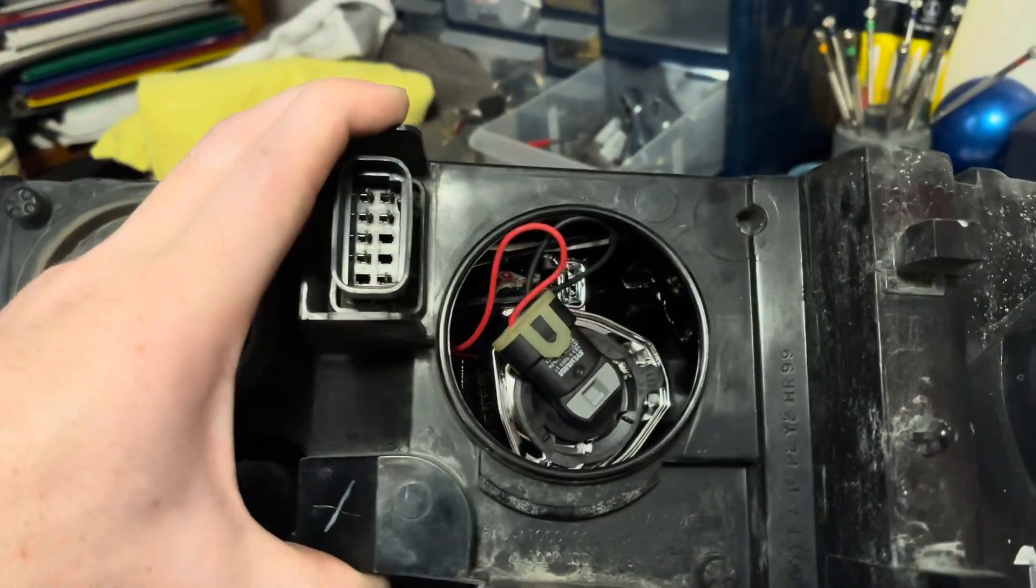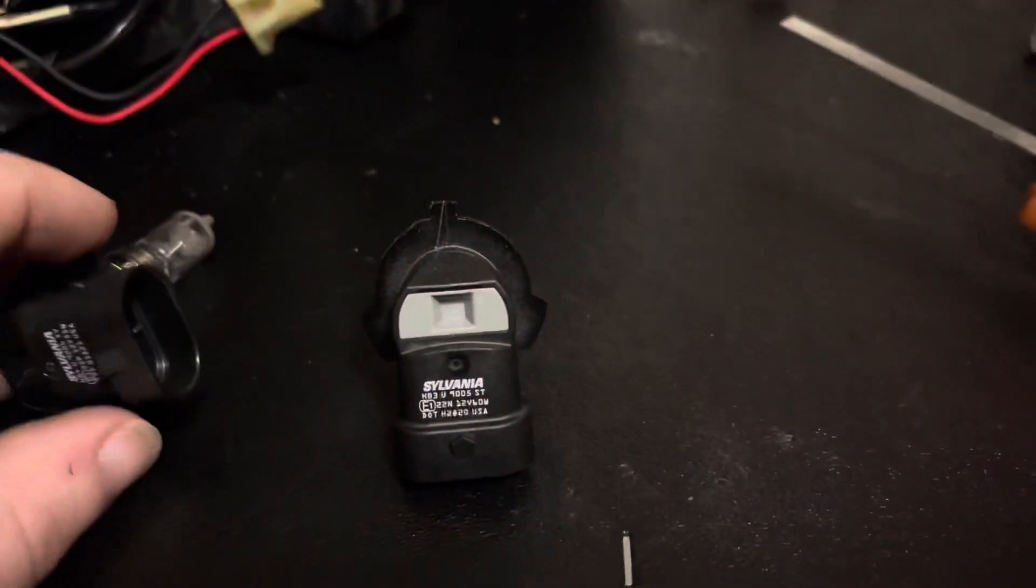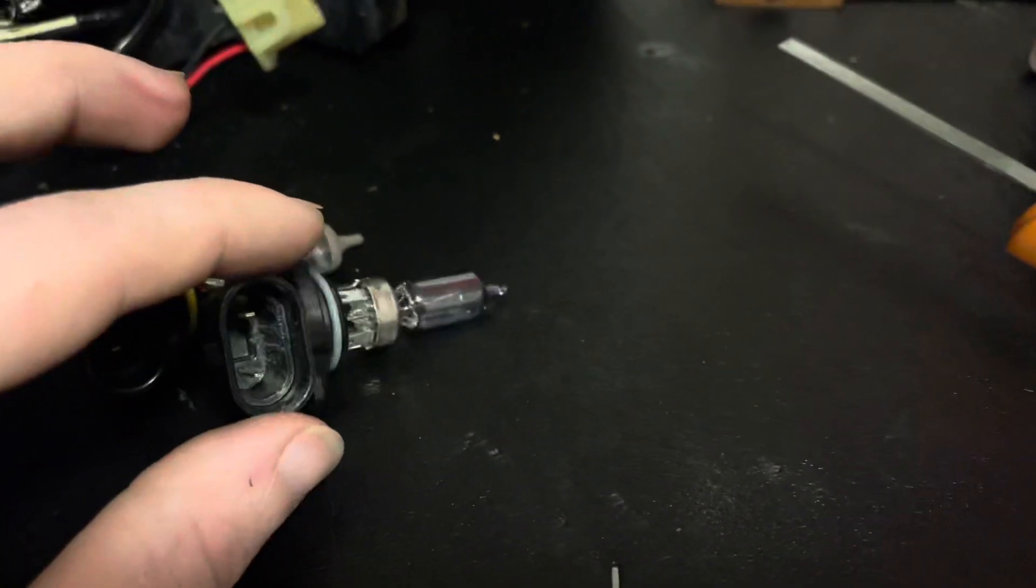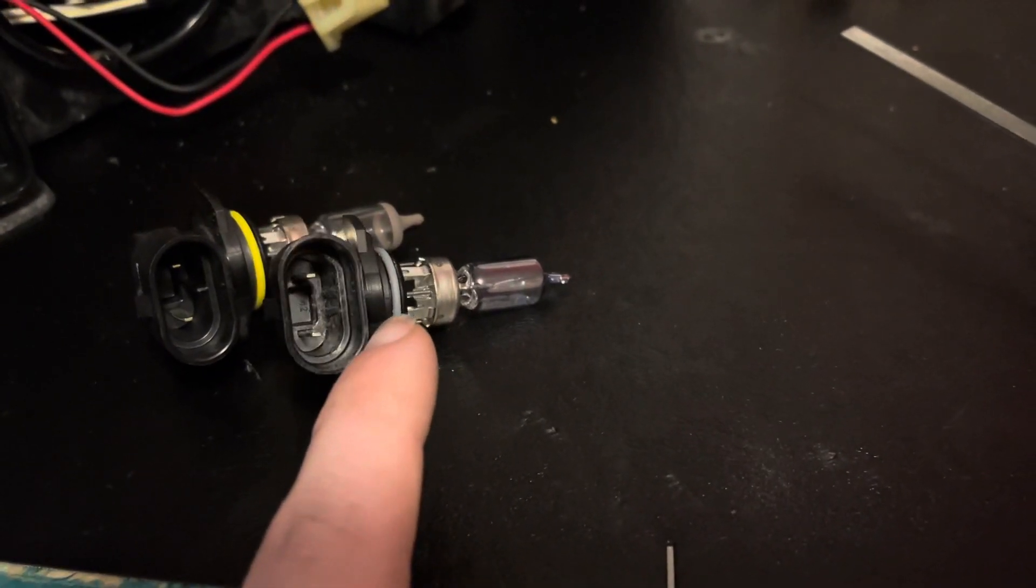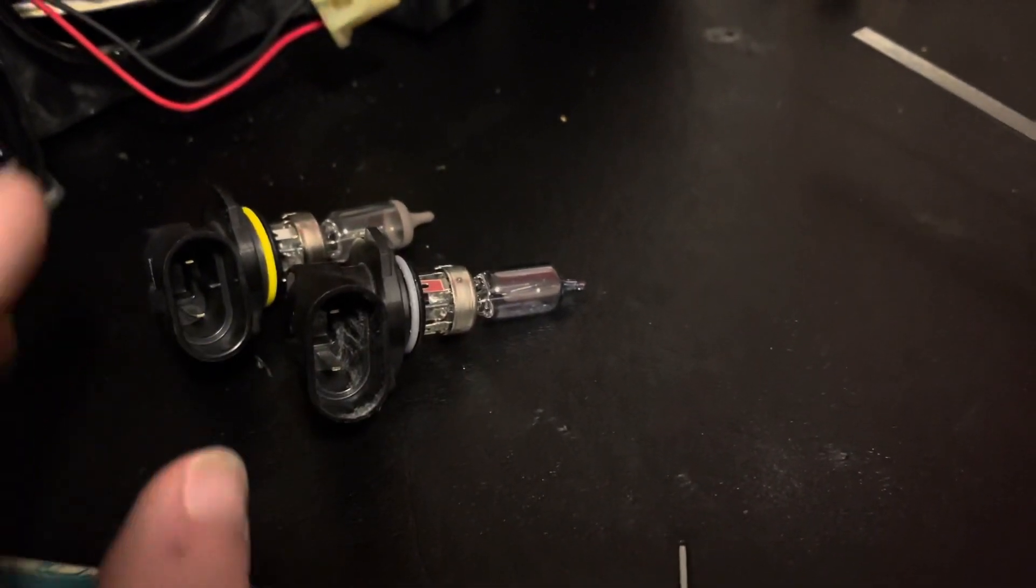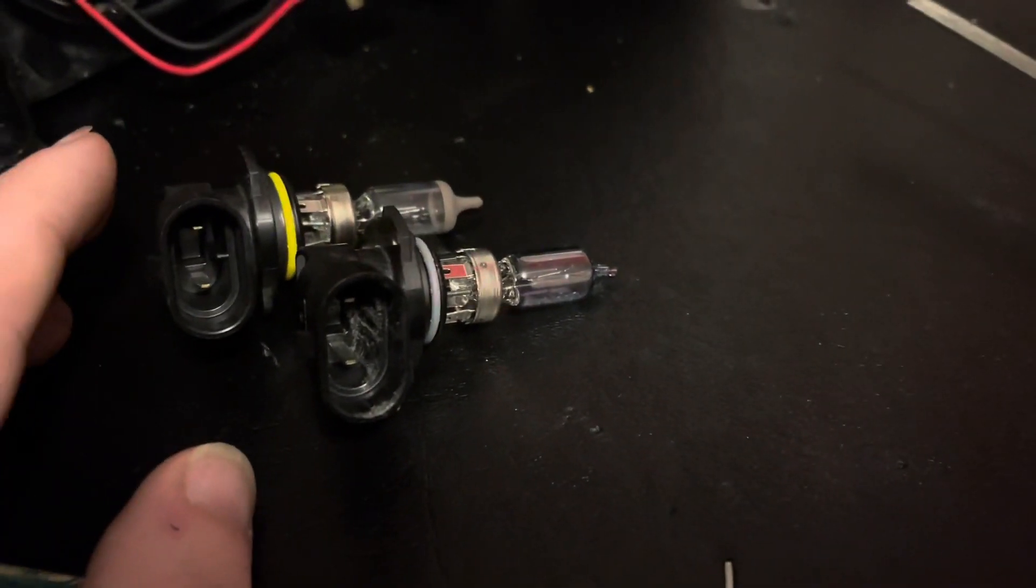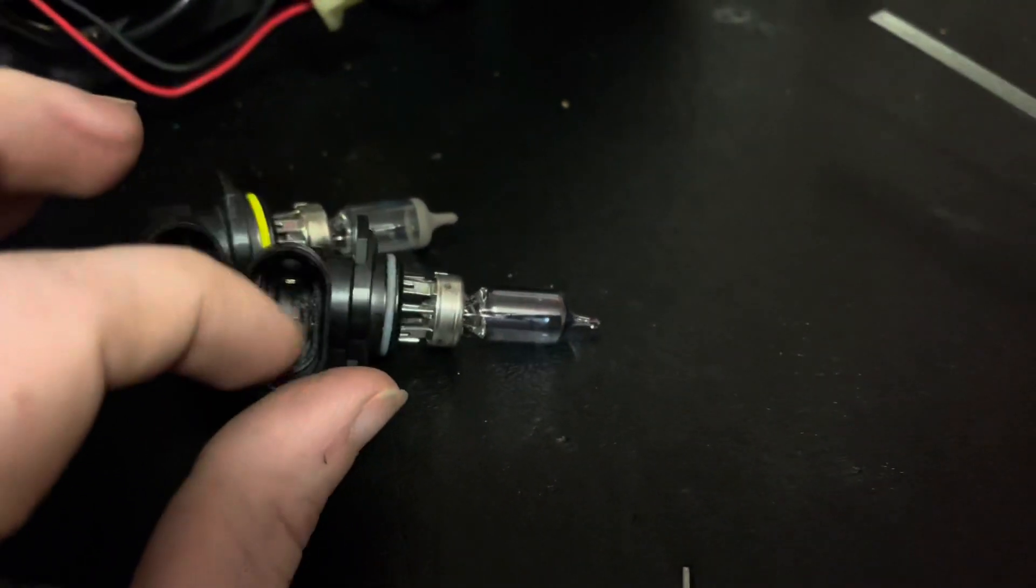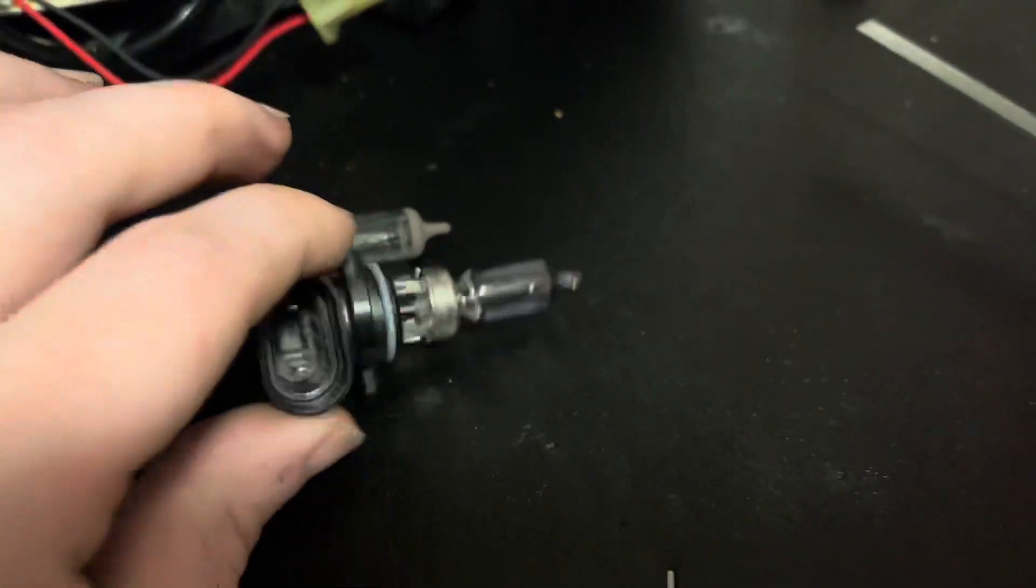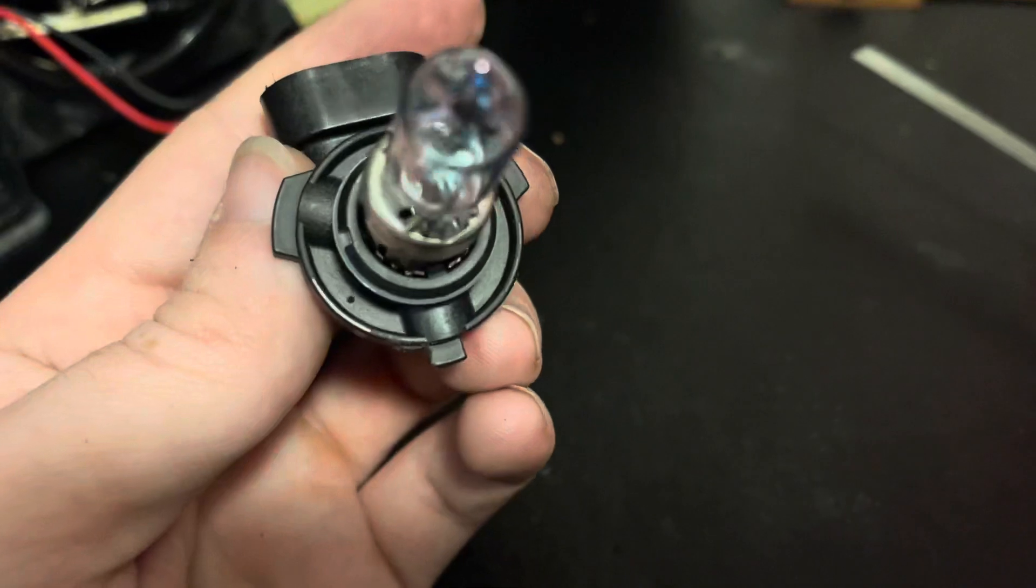Alrighty, there's the second bulb. All done. Same thing, ground out the two connectors on this. It's got two little tabs, whereas the 9006 only has one. And that's to make them non-interchangeable, obviously. But if you grind those flush and you've ground off half of this tab, they fit right in.